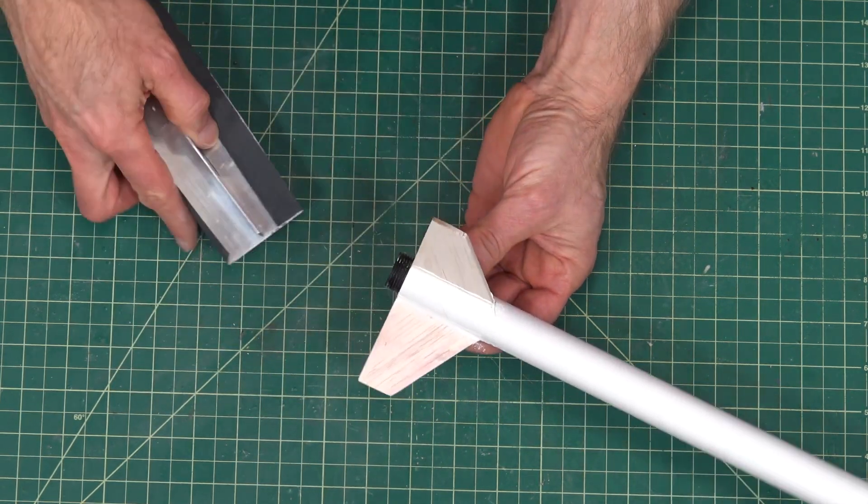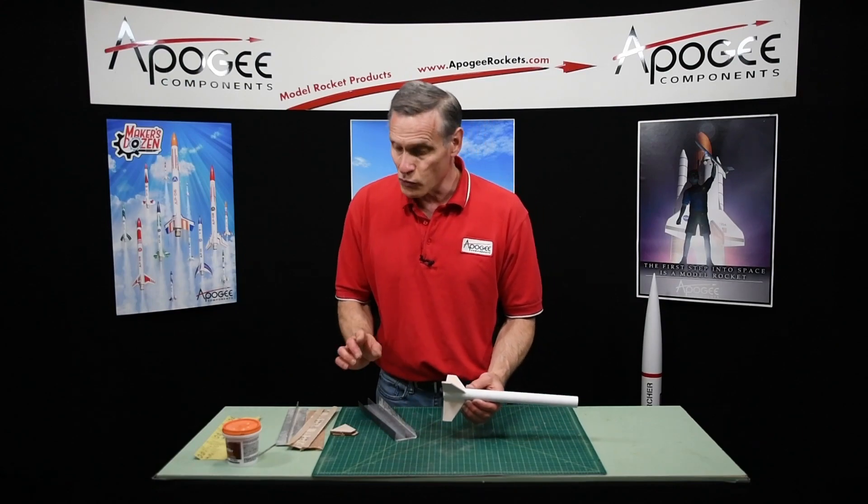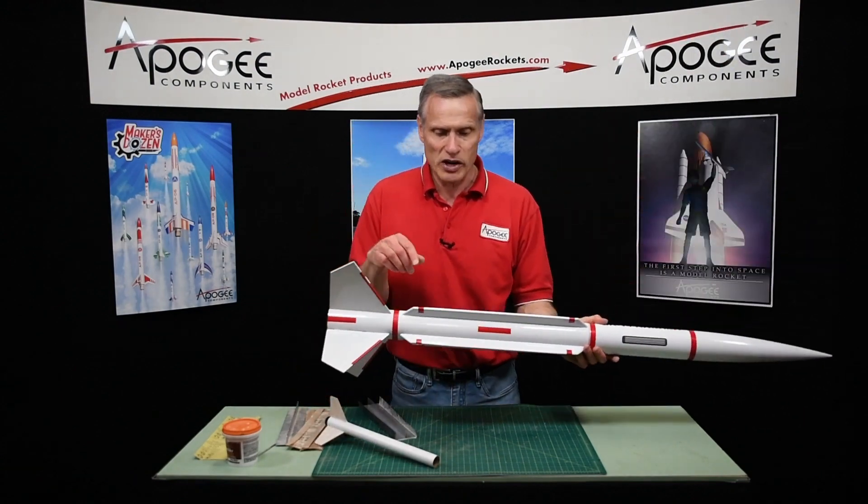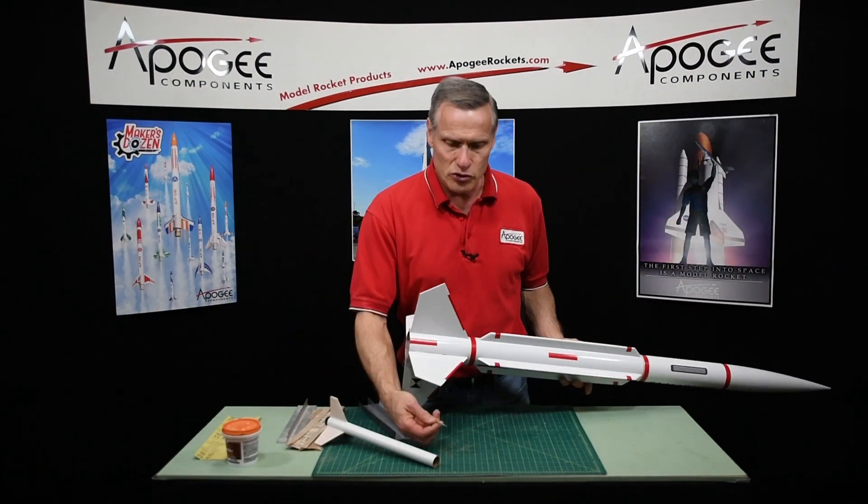Where this really works really well is when you have a fin that has a streak on it like this one here. Normally a lot of people will use a circular file like this one here to get in there and to sand out those fillets.